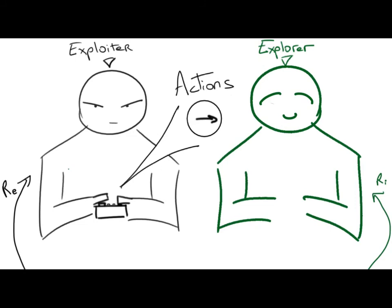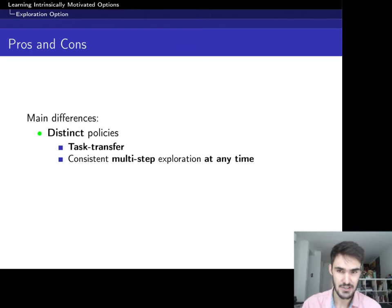So there's a lot of advantages we can see compared to the classical method. And mainly, now you have two distinct policies. So what we brought about about the loss of knowledge. Well, now, for example, for task transfer, you don't have that problem anymore, because you have this separate agent called the explorer that you can use at any time.